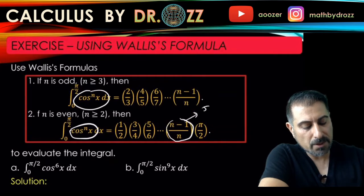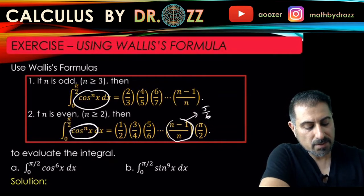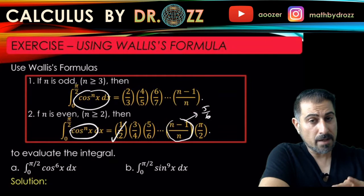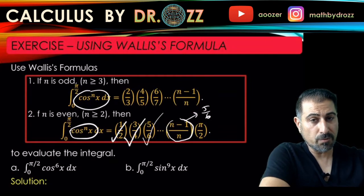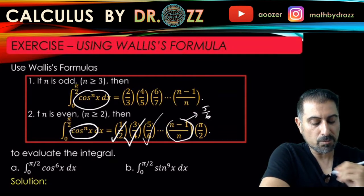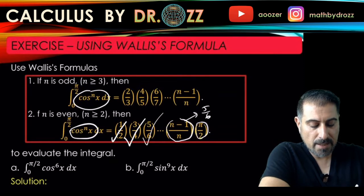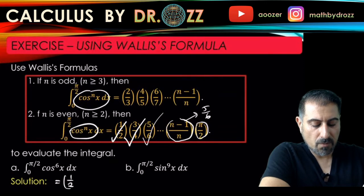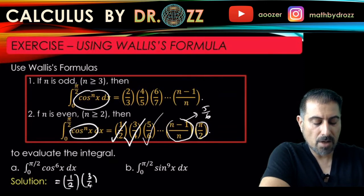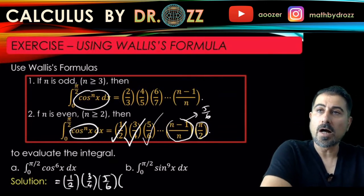So that means I'm going to keep this, keep this, keep this. And then I'm not going to have 7 over 8 anymore, but I'm going to keep also pi over 2. So I can go ahead and write this as 1 half, 3 quarters, 5 over 6, and pi over 2.